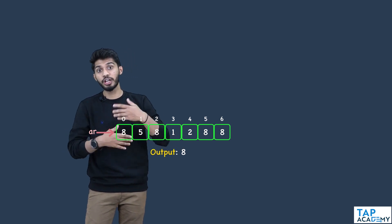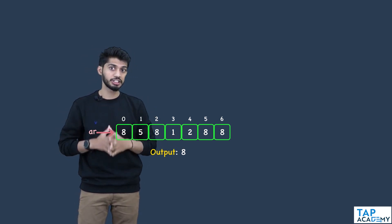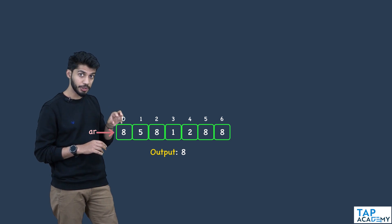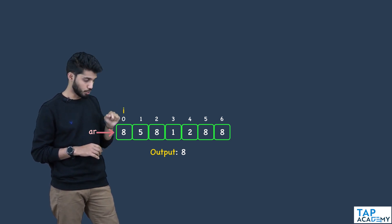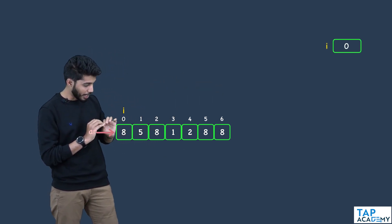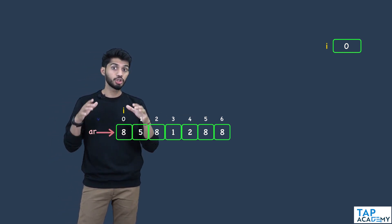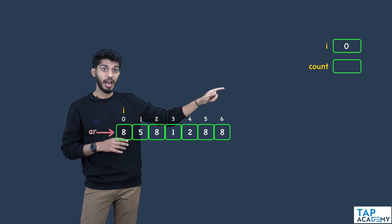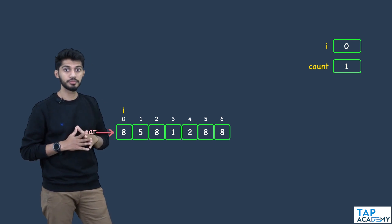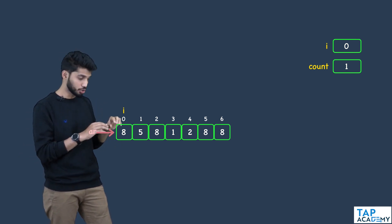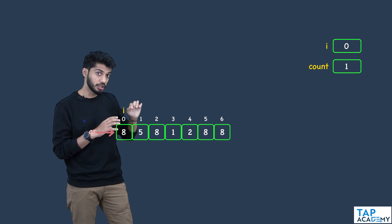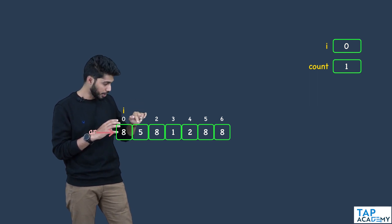If the count is not greater than n/2, I will check for another element. What I will do is pick the first element, mark its index as i, so i equals 0. Since I need to keep track of the count, I will create a variable named count and initialize it to 1, because I have already found the first occurrence. I need to check how many times 8 has occurred from index 1 till the last index.